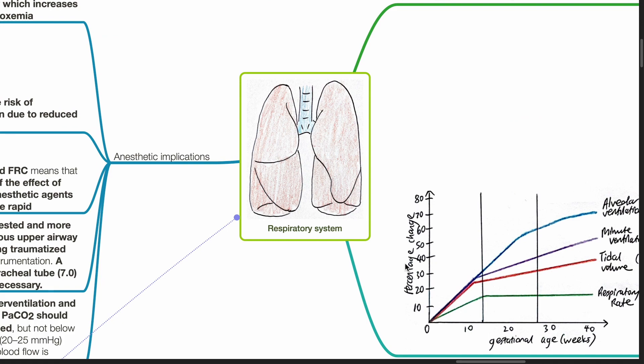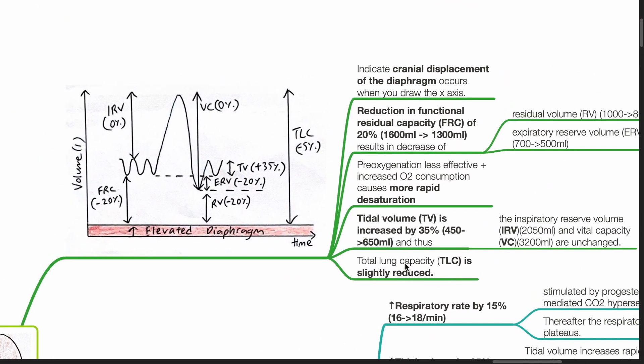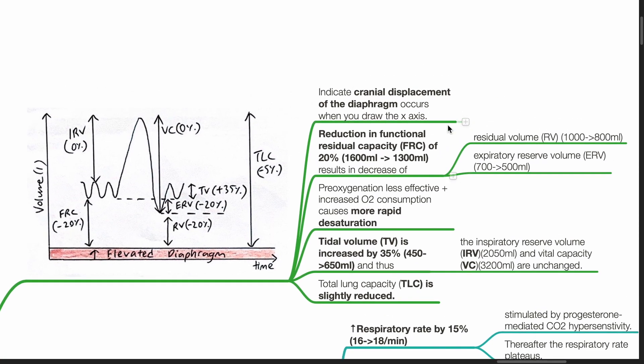Changes of the respiratory system. There is cranial displacement of the diaphragm resulting in reduction in functional residual capacity of 20% from 1.6 liters to 1.3 liters, and results in the decrease of residual volume from 1,000 mL to 800 mL and expiratory reserve volume from 700 to 500 mL.